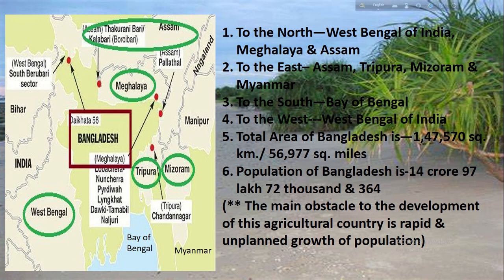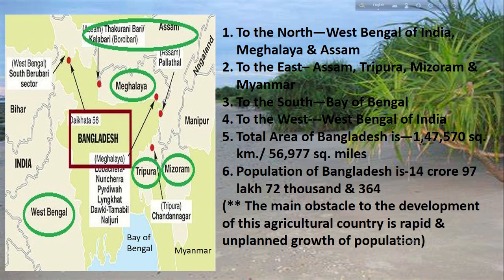Our country has six seasons and the rainy season is one of the major seasons. It is also a fertile deltaic region. To summarize: to the north are West Bengal of India, Meghalaya and Assam; to the east are Assam, Tripura, Mizoram and Myanmar; to the south is the Bay of Bengal; to the west is West Bengal of India. The total area of Bangladesh is 1,47,570 square kilometers, also 56,977 square miles. The population of Bangladesh is approximately 14,97,72,000. Bangladesh has a huge population and is one of the most densely populated countries of the world. The main obstacle to the development of this agricultural country is the rapid and unplanned growth of population.